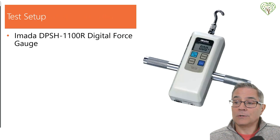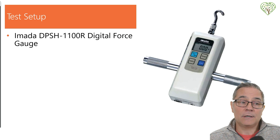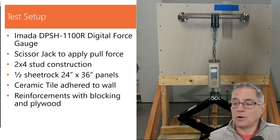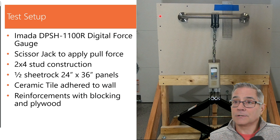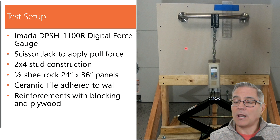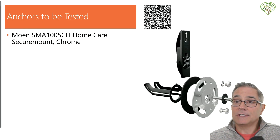To measure force during my testing, I'm using an Amata digital force gauge — a push-pull meter that measures push or pull force up to 1,100 pounds. My test setup uses this Amata gauge with a scissor jack (the kind used in a car) bolted to a four-by-four on the bottom. I have standard two-by-four wall construction with half-inch sheetrock at 24-by-36-inch panels. We'll also test with tile glued on, and with various wall reinforcements like blocking and plywood.